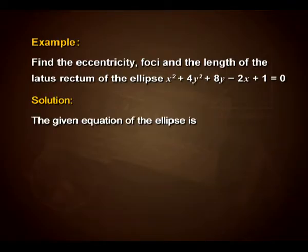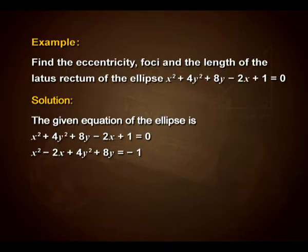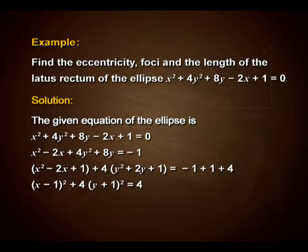The given equation of the ellipse is x² plus 4y² plus 8y minus 2x plus 1 equals 0, which can be simplified as x² minus 2x plus 4y² plus 8y equals minus 1, which can be rewritten as x² minus 2x plus 1 plus 4 into y² plus 2y plus 1 equals minus 1 plus 1 plus 4. We have added 1 and 4 on both sides in order to complete the square.